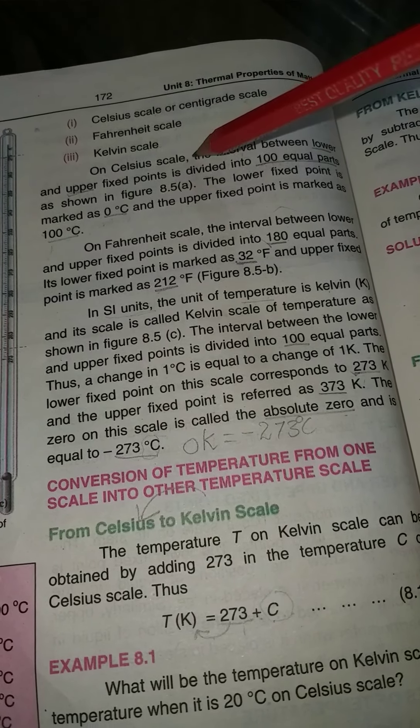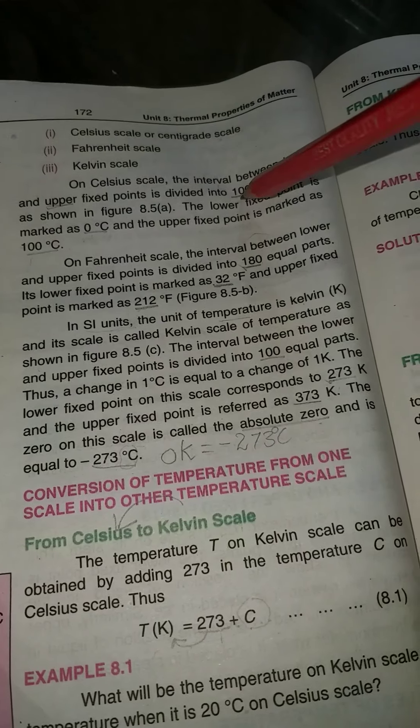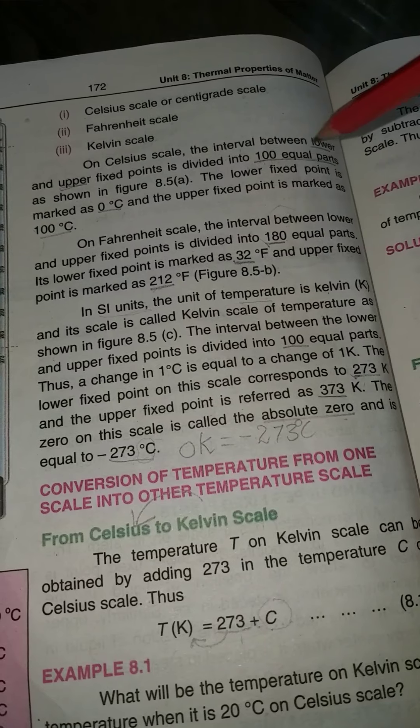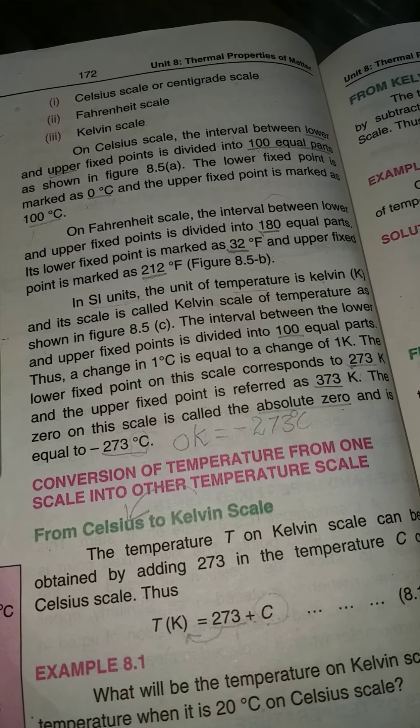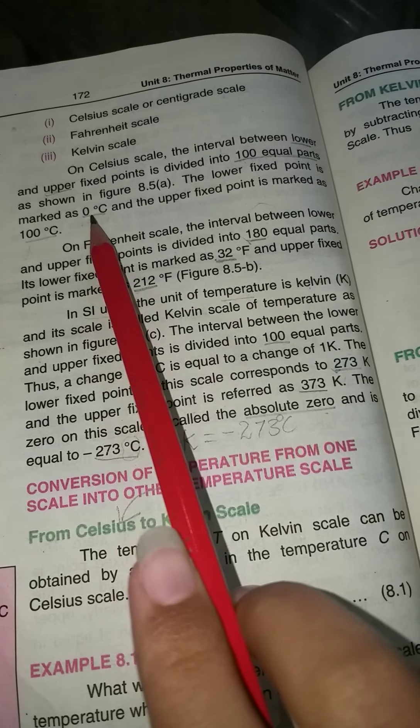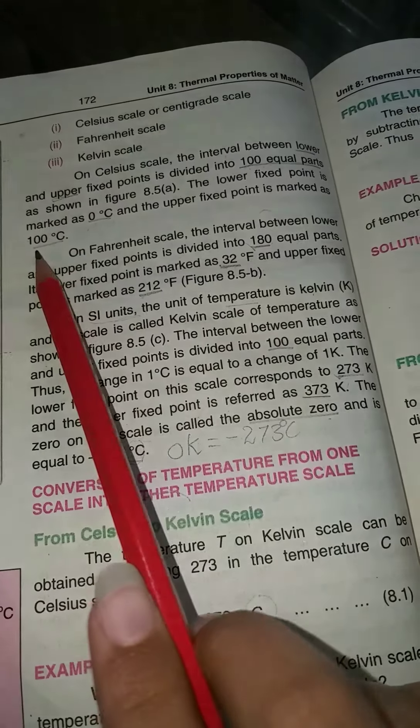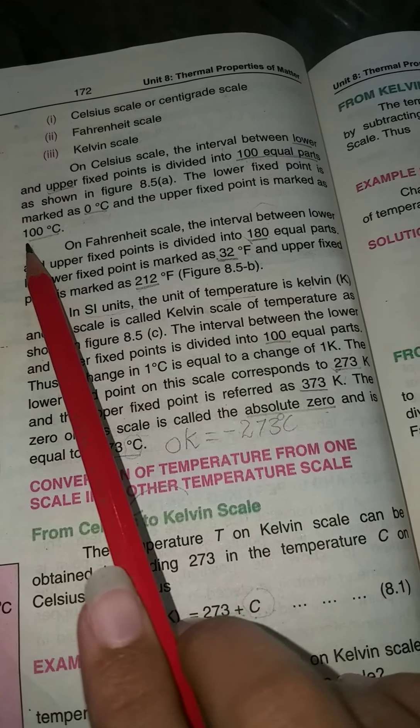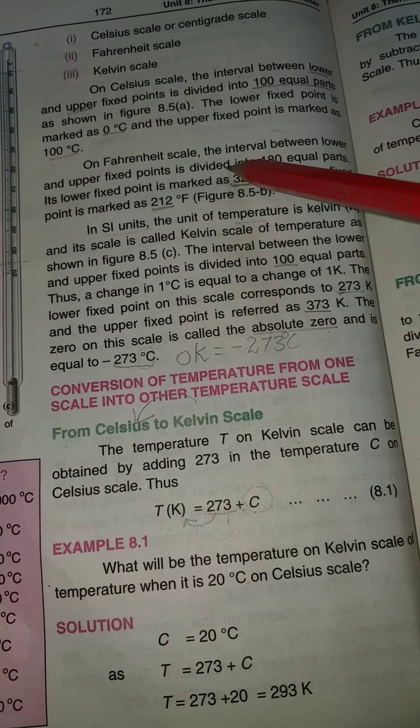The first one is Celsius Scale. How much is it divided? It is divided into 100 equal parts. The lower fixed point is 0 degrees and the upper fixed point is 100 degrees.